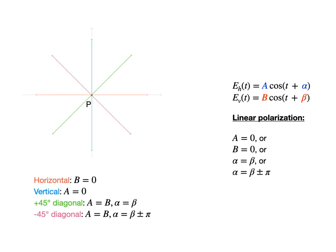Here you can see the conditions as well as the color-coded trajectories of the four most important linear polarizations: horizontal, vertical, plus 45 degrees diagonal, and minus 45 degrees diagonal.